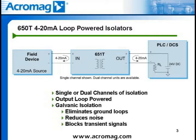One application would be where a field device is sourcing a 4 to 20 milliamp DC signal, and this signal is to be an input to a PLC which is also providing power through an internal 24-volt DC source. In this case, both the field device and the PLC are trying to power the analog loop — this will not work. A two-wire isolated transmitter is required to correct this power problem. The 651T will take the sourced 4 to 20 milliamp DC input signal and provide a sinking 4 to 20 milliamp DC output signal, enabling the 24-volt DC power supply at the PLC to power the input loop.